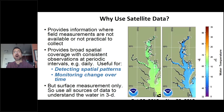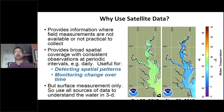So, why use satellite data? Satellite data provides information where we can't get field measurements, or where it's not practical to get them. It also gives us broad spatial coverage with periodic observations at consistent intervals — for example, satellite data on a daily basis. Those two aspects — broad spatial coverage for detecting spatial patterns, and periodic frequency of observation — are both really great for monitoring change over time.